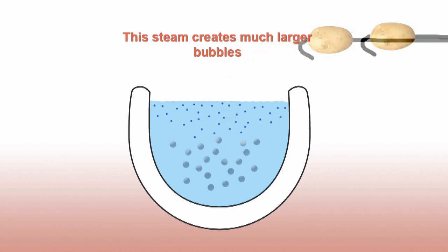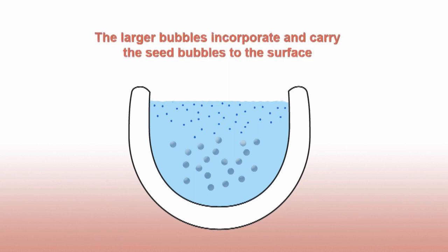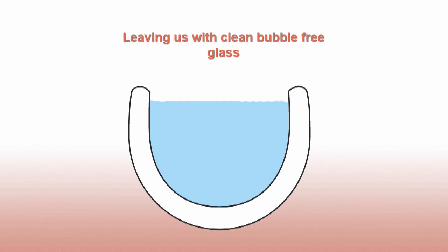The larger bubbles have a much easier time floating to the surface of the glass. As the larger bubbles rise to the surface, they also incorporate and carry the smaller seed bubbles. This gives us a much cleaner tank of glass to work with.